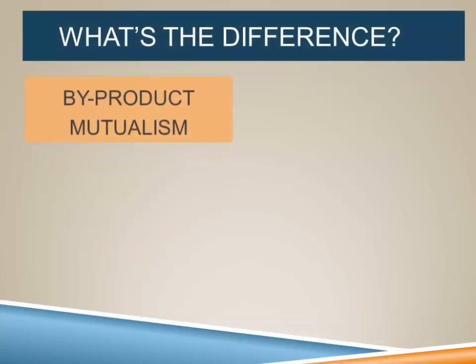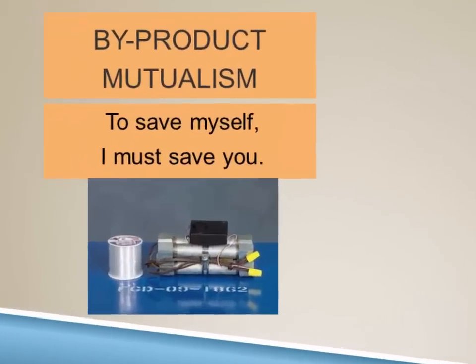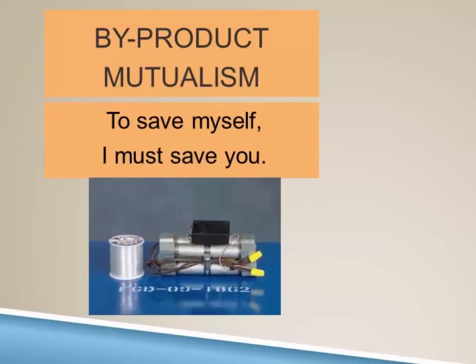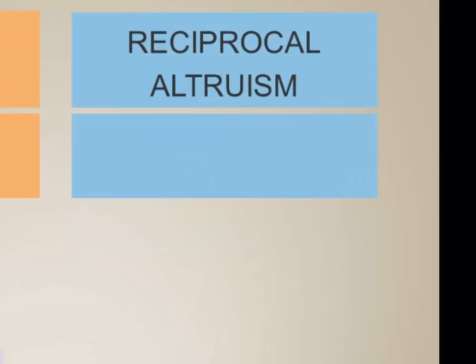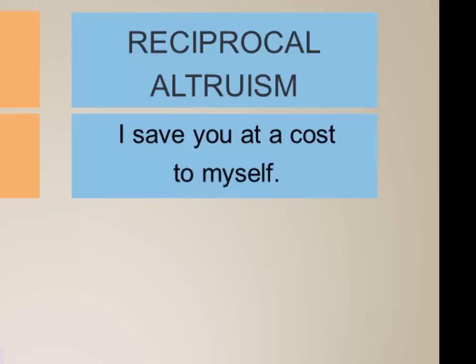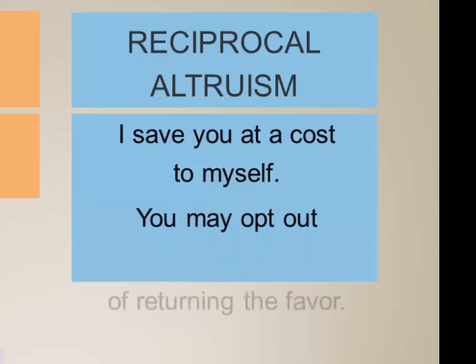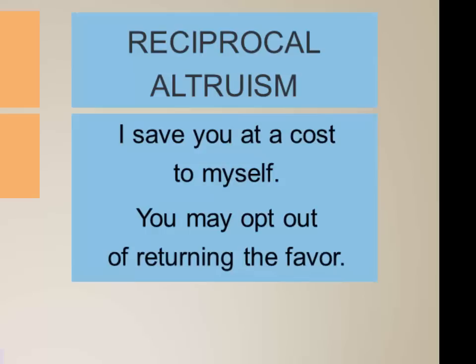One way to frame byproduct mutualism is with the phrase 'to save myself I have to save you.' Imagine we're both locked in a cage with a bomb — I defuse it, save my own life, and in doing so save yours, because there's no way to save myself without saving you. In contrast, reciprocal altruism would be if you're trapped with a bomb and I enter that room when I don't need to, putting myself at risk to save you — because later you might opt out of taking an equal risk to save me.